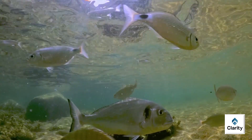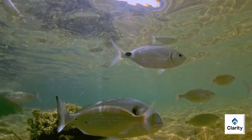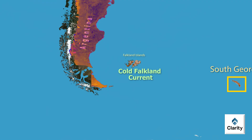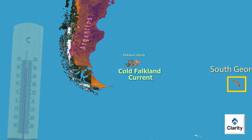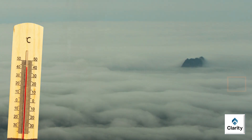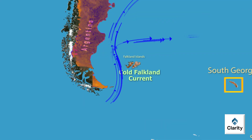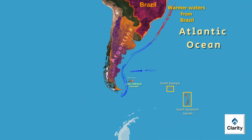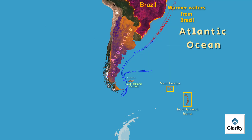The current's cold water supports abundant fish and marine mammals, making the waters around the Falklands rich fishing grounds. The cold waters from the Falkland Current also lower temperatures and increase fog around the islands. The interaction between the cold Falkland Current and warmer waters from Brazil further north creates rich marine biodiversity, making the Falkland Islands important for wildlife and fisheries.